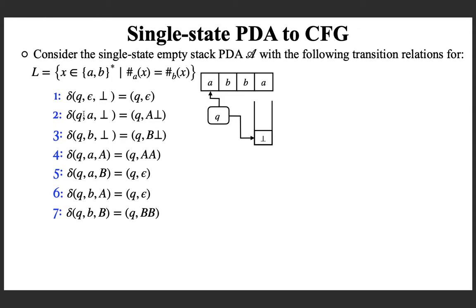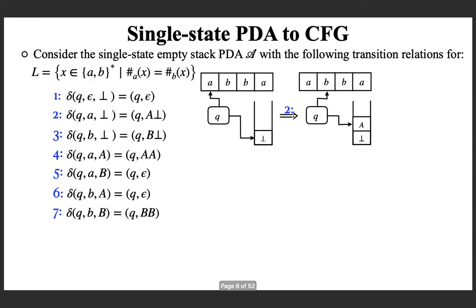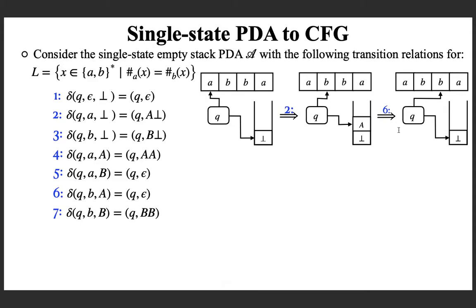Which transition can be applied? The current state is Q, the next input symbol is A, and the top of stack is bot — that is transition number 2. It says: remain in state Q and replace bot with A bot. So you replace bot with A bot and move the read head to the next symbol. Now which transition applies? The state is Q, input is B, and top of stack is A — that is transition number 6, which says pop the top-of-stack symbol A. Nothing is pushed since it is epsilon.